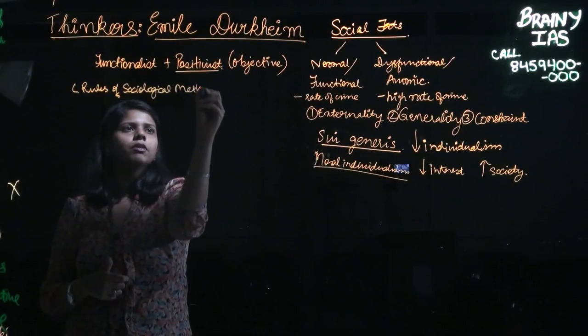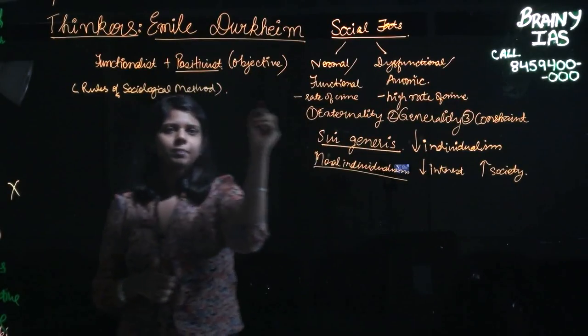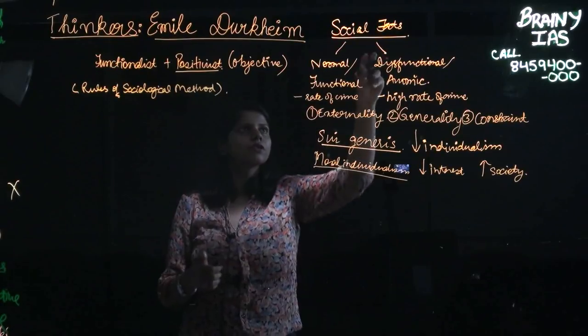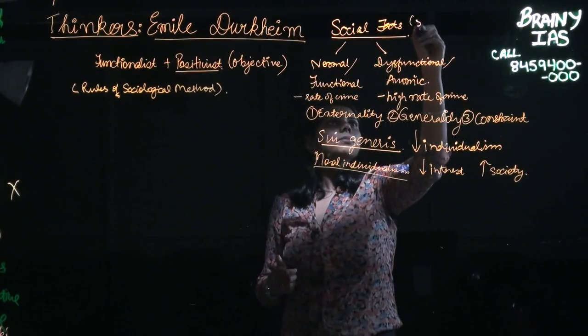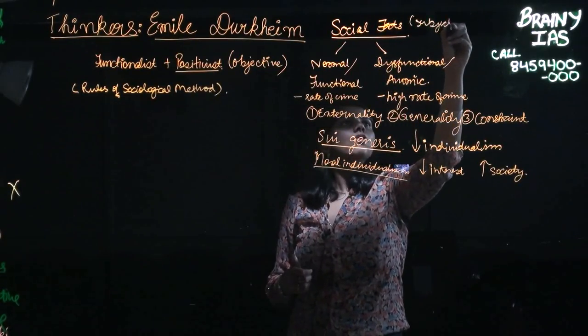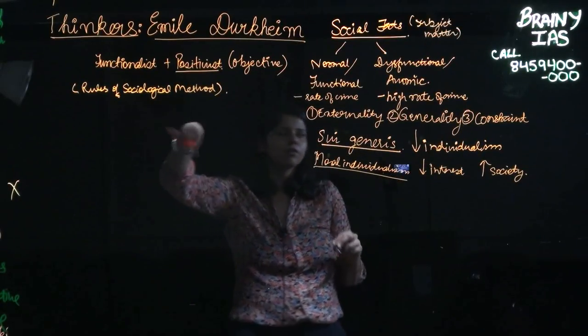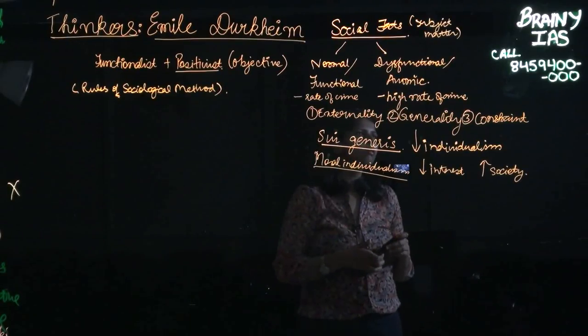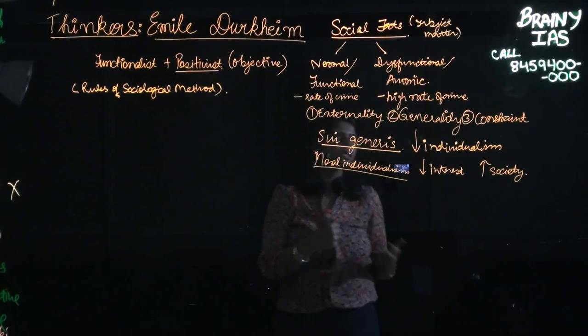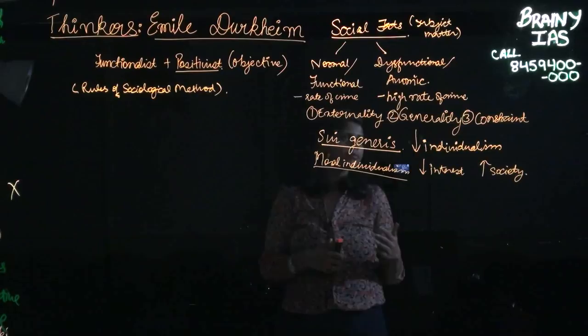Because if you are writing about it and you are explaining that according to Durkheim, social facts are the subject matter of sociology, it will be really good if you substantiate it with the name of the book. So after having explained sui generis and the various types of it, there is bound to be some kind of criticism from the fraternity.